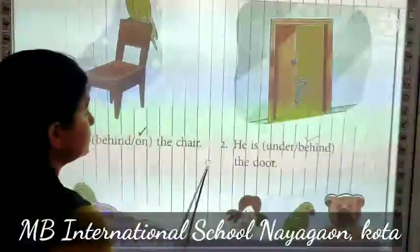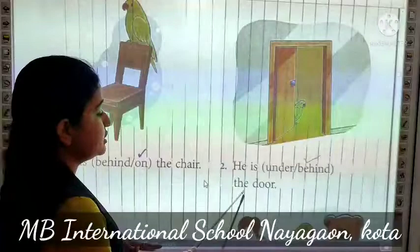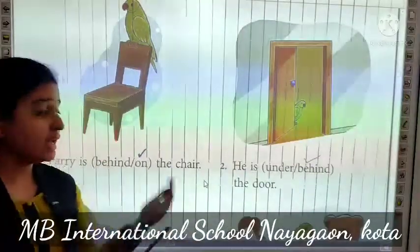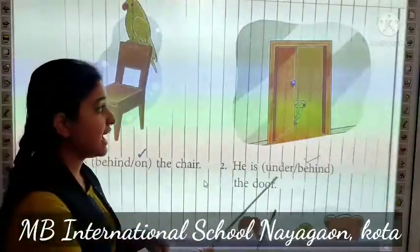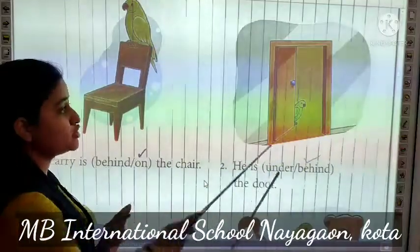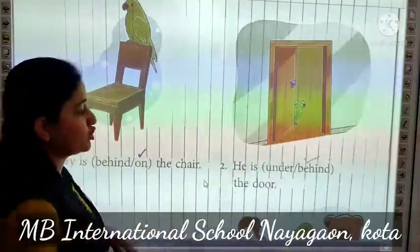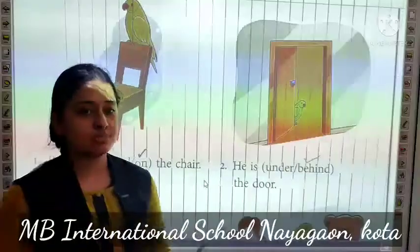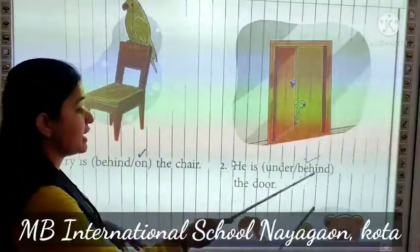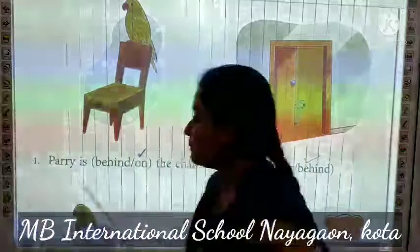Now next, he is dash the door — under or behind. Under means niche, behind means piche. Picture mein joh Parry hai woh door ke piche hai, toh haam behind concept prepositions ka use karenge. He is behind the door, ki woh door ke piche hai.